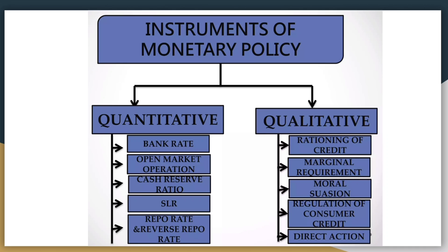पांचवां है repo rate और reverse repo rate। Repo rate वो rate होती है जिसमें RBI commercial banks को loan provide करती है। Reverse repo rate वो rate होती है जिसमें commercial bank के पास ज़्यादा पैसा हो तो वो RBI को दे सकती है और उनसे interest ले सकती है। Reverse repo rate, repo rate से कम होता है।